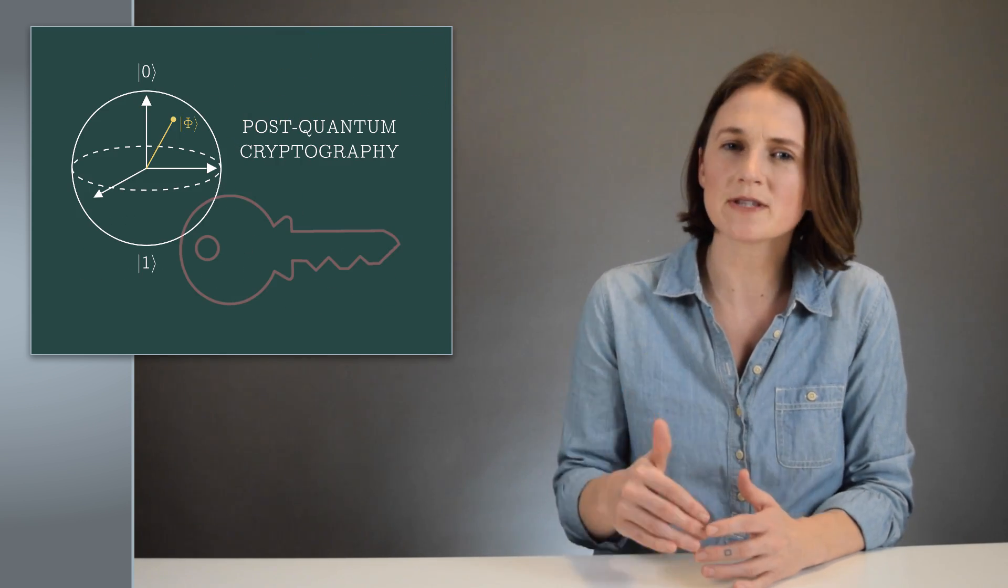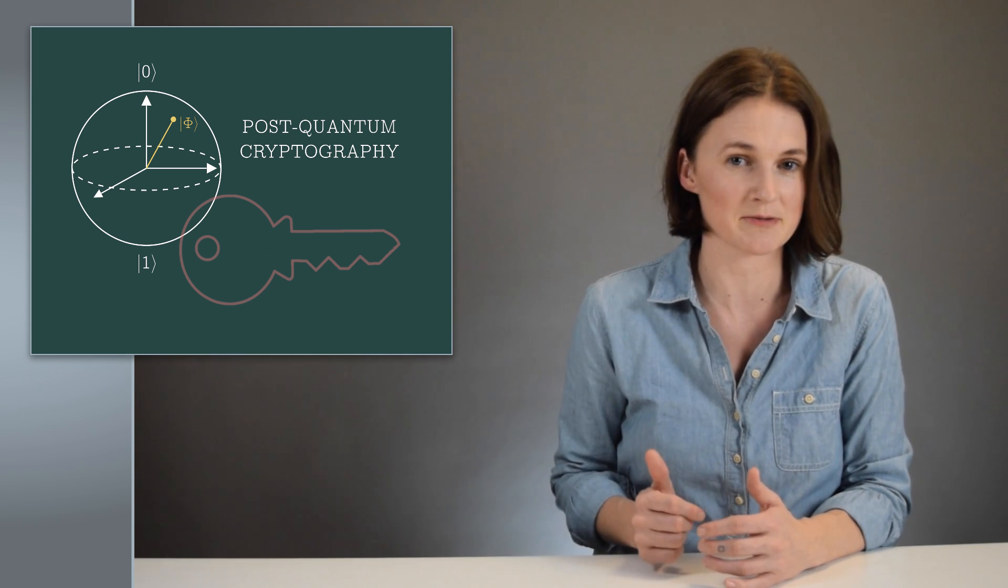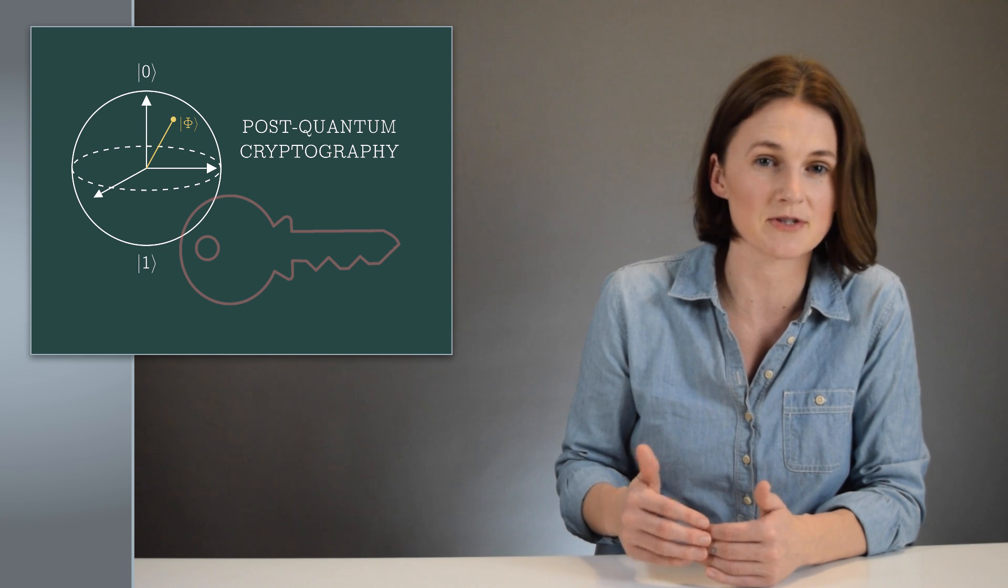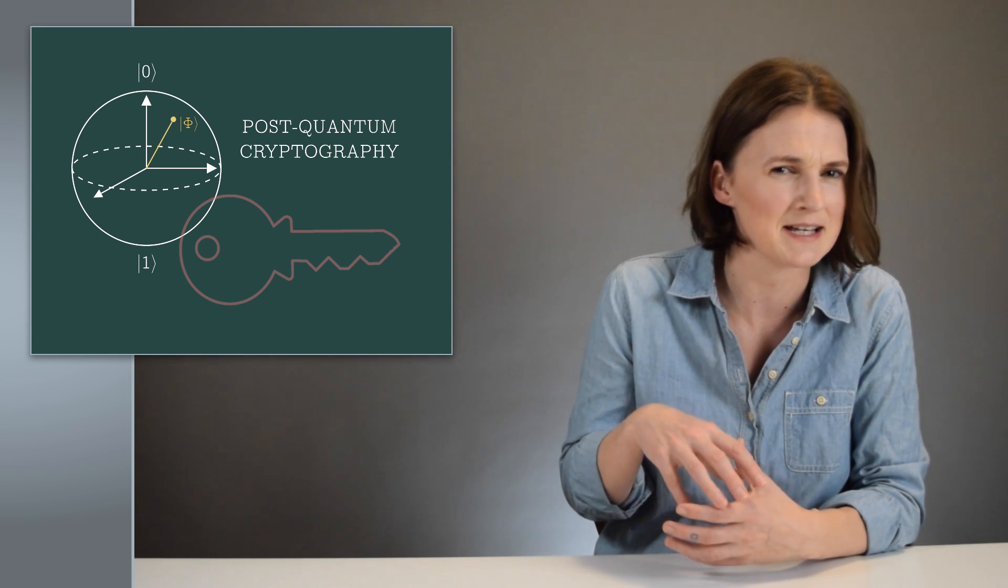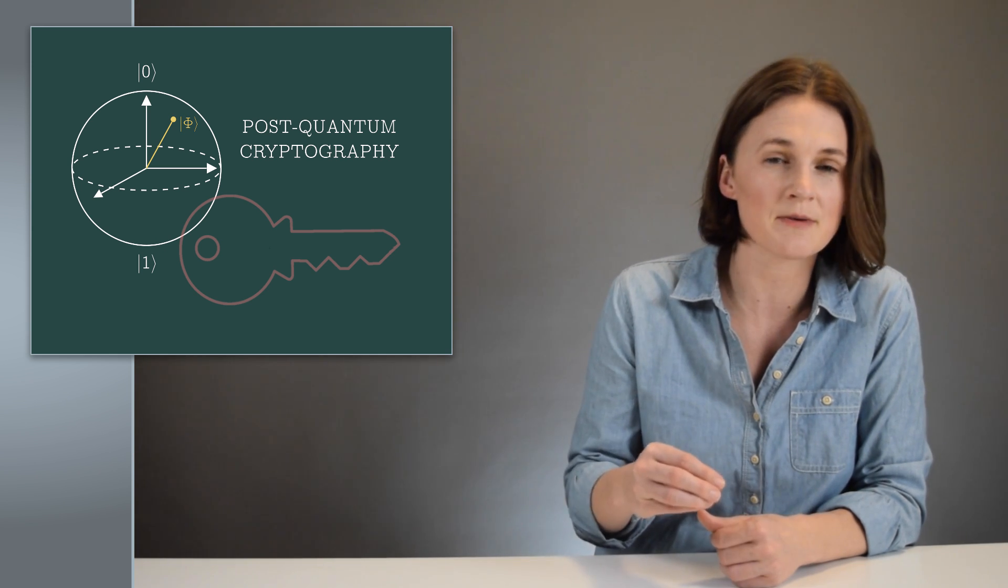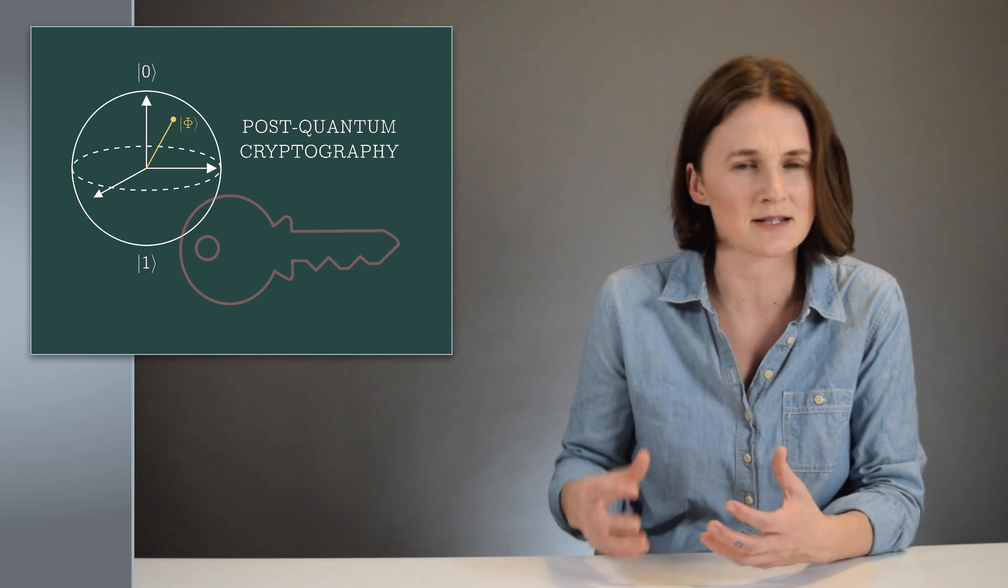But Shor's algorithm works on a mathematical model of a quantum computer. It's idealized. The real quantum computers that we currently have are tiny. They don't have enough qubits, quantum bits, to implement Shor's algorithm and factor a decent sized number.